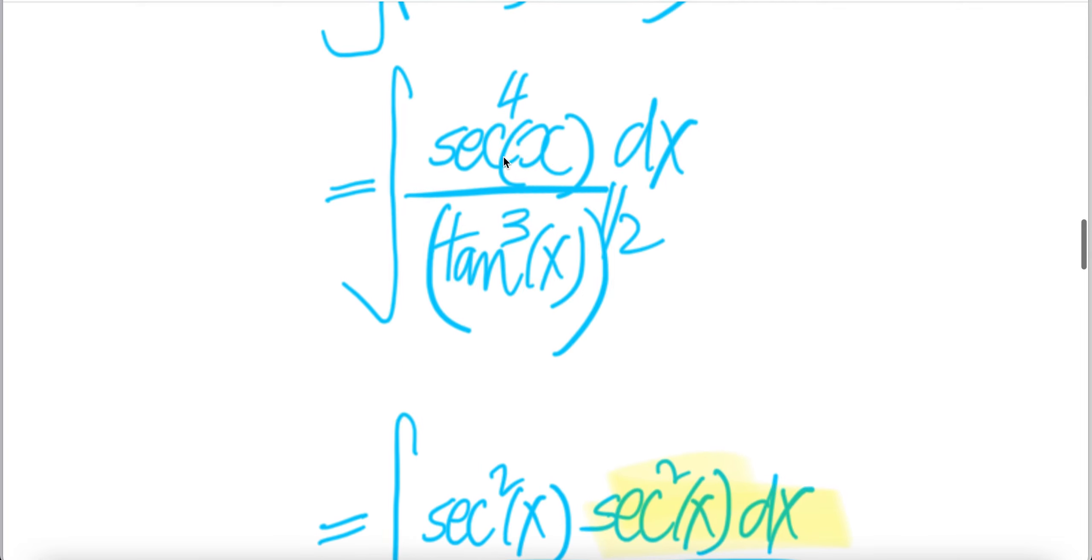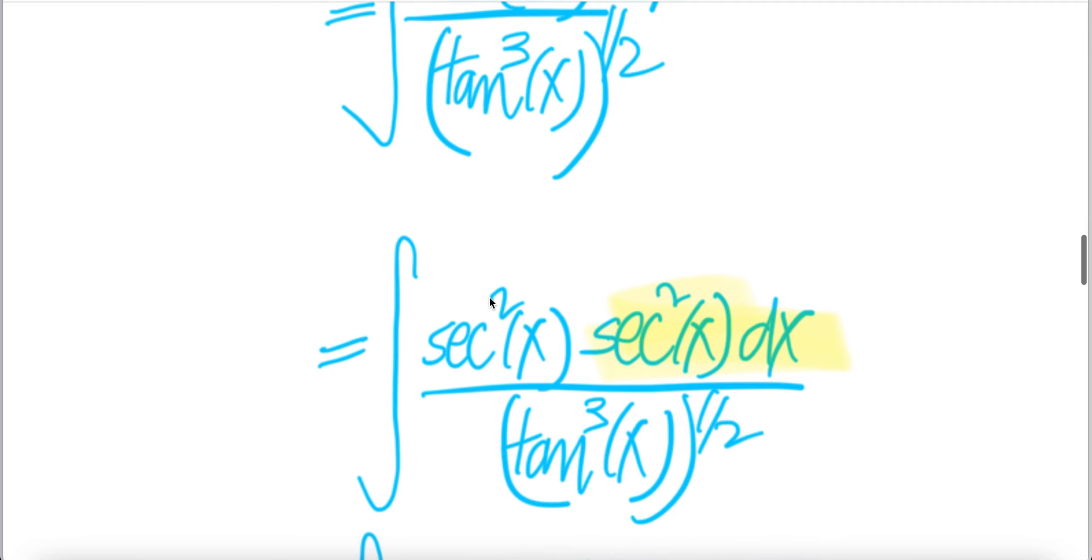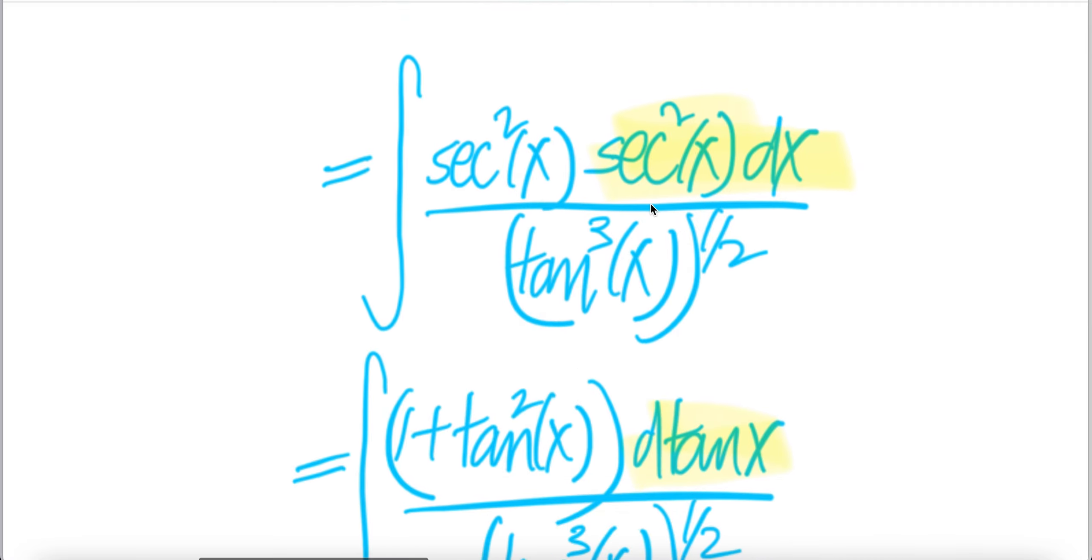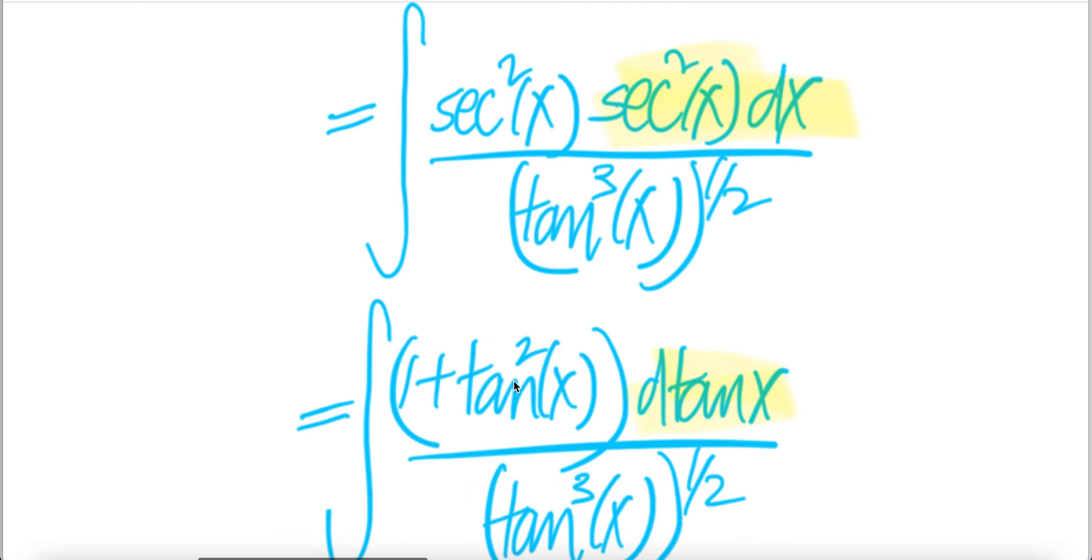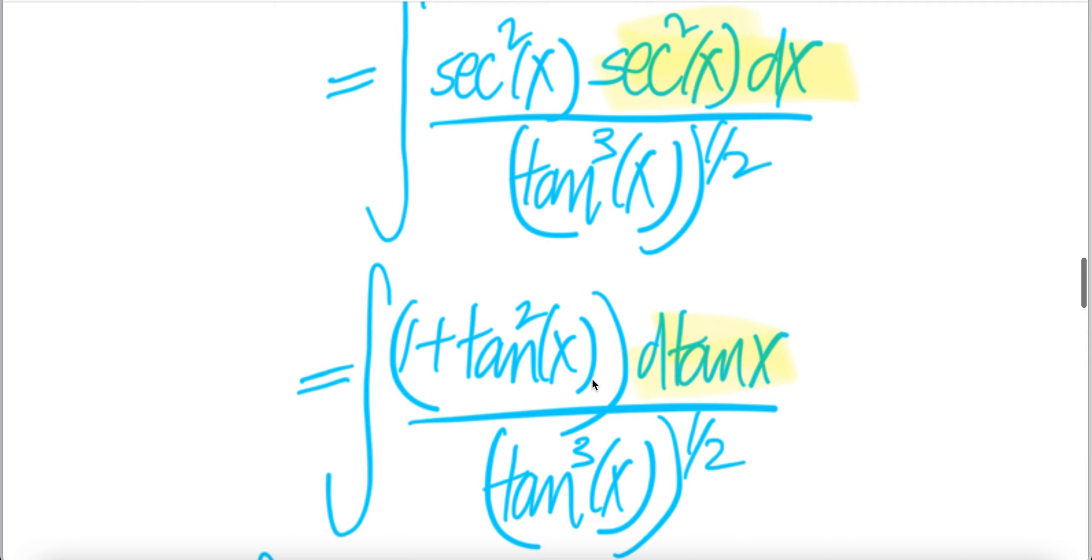Now, you can peel off a sec squared x from here, and then you're left with sec squared x, and then downstairs is the same. Now, you can push this into dx, derivative of tangent x is sec squared x dx, and then write this as 1 plus tangent square x, and then this piece is here.